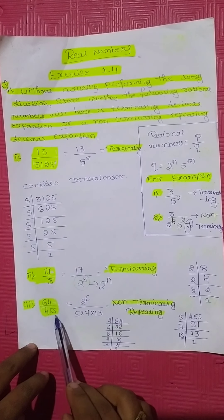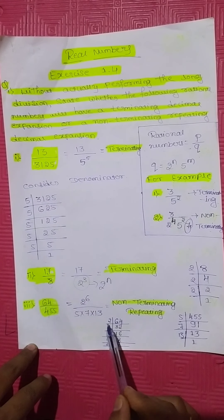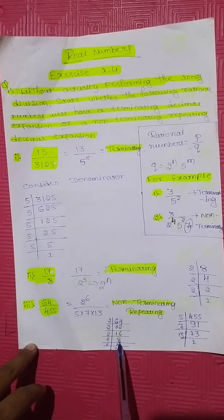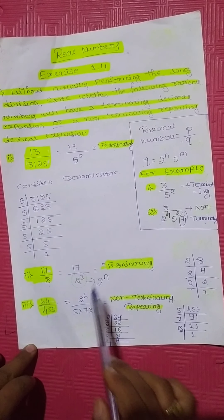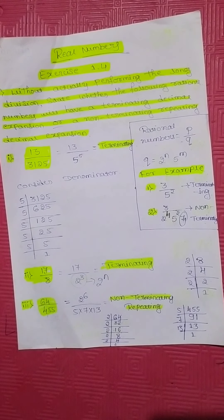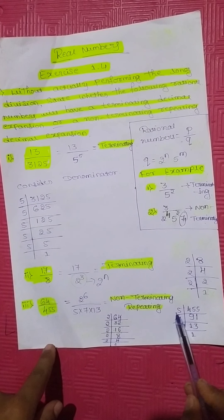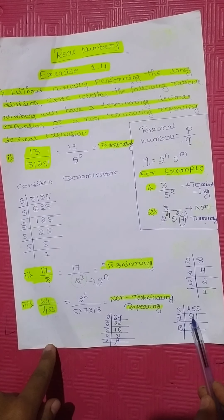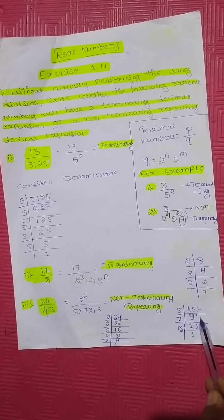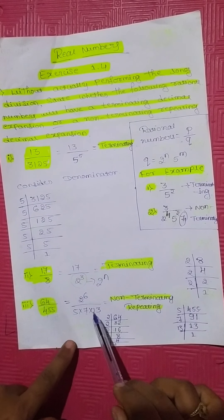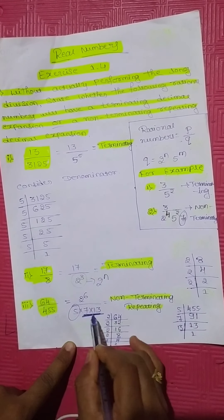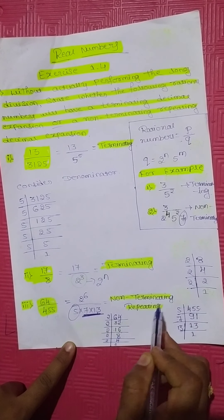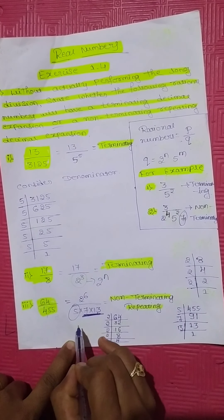Third question: 64 divided by 455. The numerator 64 can be expressed as prime factors: 2 appears 6 times, so 64 equals 2 to the power of 6. The denominator 455 factors as 5 into 7 into 13. Here 5 is present but 7 and 13 are also there, therefore this is a non-terminating repeating decimal expansion because the denominator contains 7 and 13.